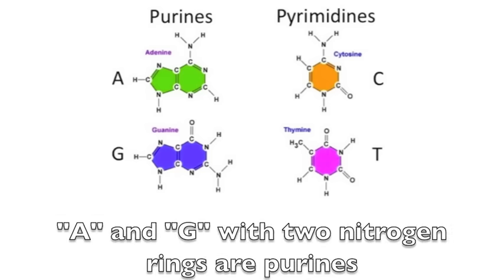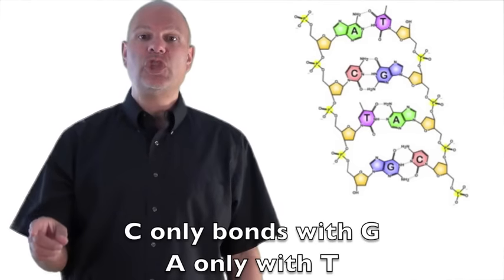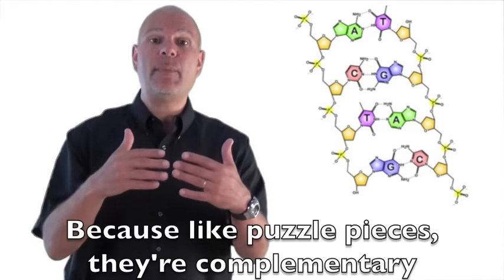A and G with two nitrogen rings of purine, C and T with one ring are pyrimidine. C only bonds with G, A only with T, because like puzzle pieces, they're complementary.